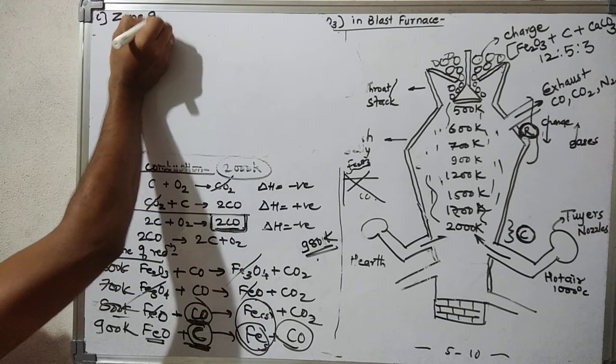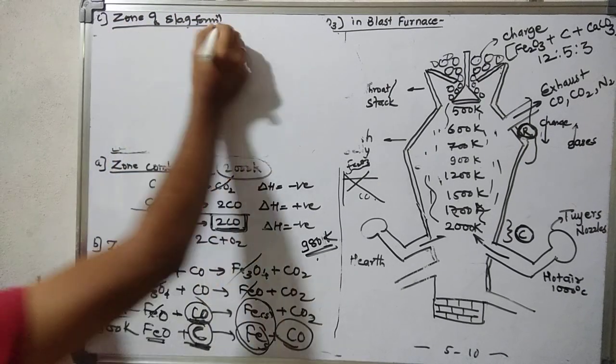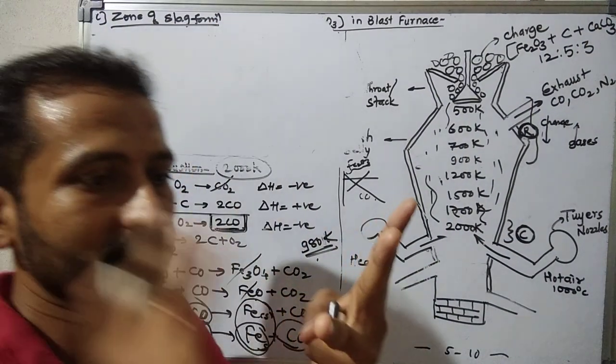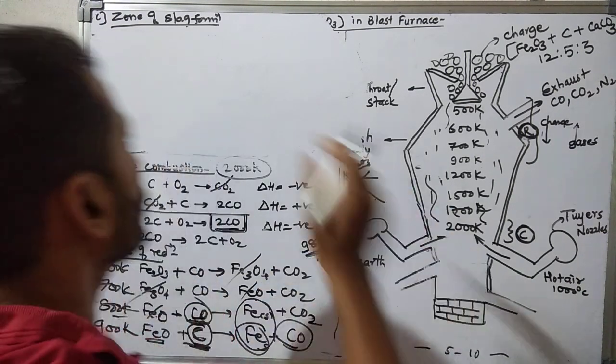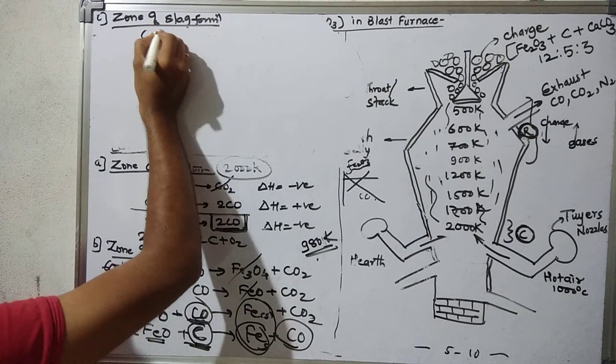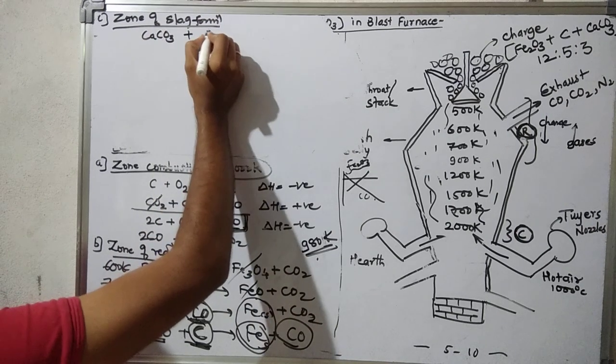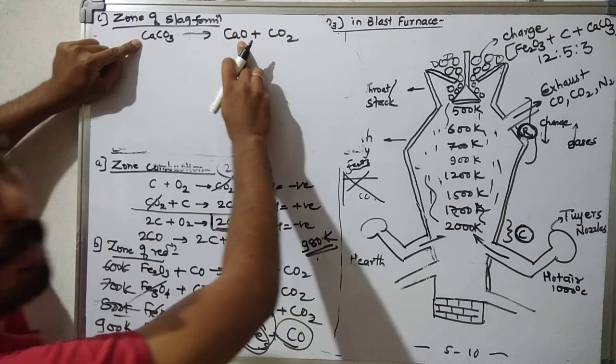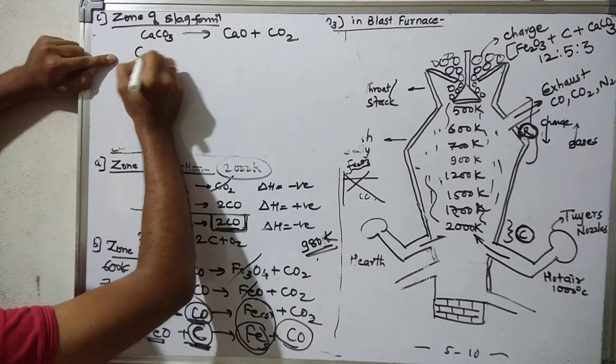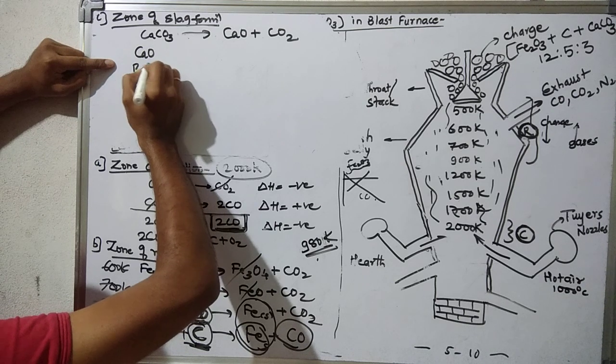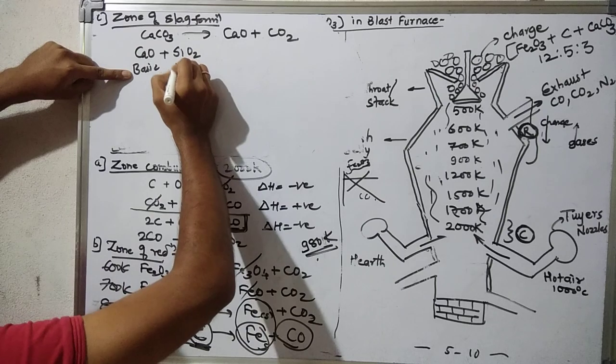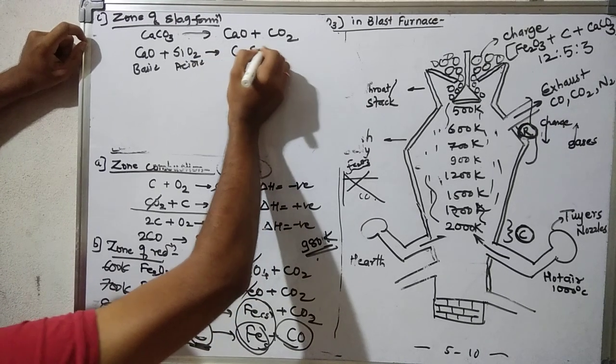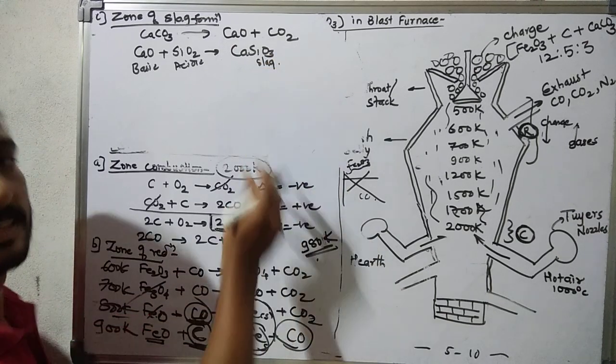The zone of slag formation. Now, limestone is used here to form slag and remove impurities. Silica, alumina, phosphate, manganese dioxide are impurities. This limestone first dissociates to form calcium oxide plus CO2. CaCO3 breaks to form CaO plus CO2. That CaO is basic, and the silica impurity is acidic. So basic flux combines with acidic impurity to form CaSiO3 slag. This is the slag. We have seen this reaction in the smelting cases.